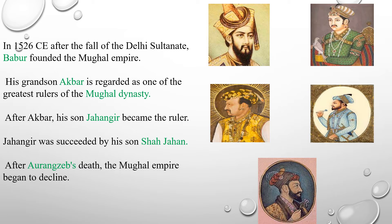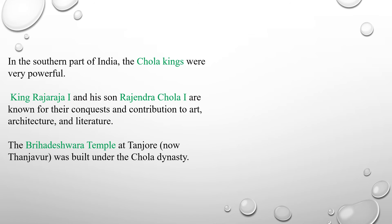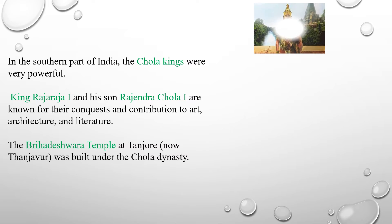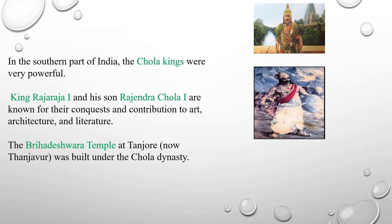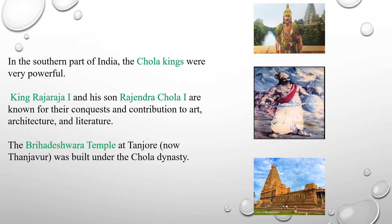After Aurangzeb died, the Mughal Empire began to decline. In the southern part of India, the Chola kings were very powerful. King Rajaraja I and King Rajendra Chola I were great and powerful rulers of the Chola dynasty. The Brihadeeswarar temple at Tanjur was built under the Chola dynasty.